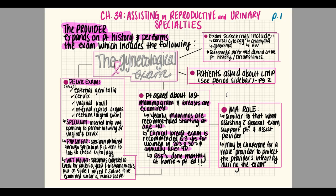A pap smear is then obtained by inserting a sterile swab through the opening created by the speculum. That specimen is sent to the lab to check the cytology for abnormal cells. Another test is a wet mount — specimens are collected to check for bacteria, yeast, and trichomoniasis. The specimen is smeared on a slide mixed with saline and examined under a microscope, which is how it gets the name 'wet mount.'